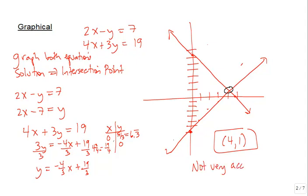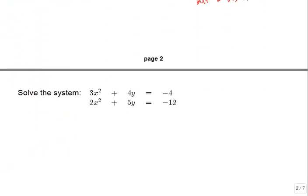However, the graphical method is very visual. You can picture on the graph exactly what's going on—we're trying to find where these two lines have the same x and same y at the same time, and that's this intersection point.